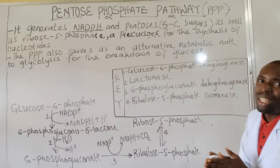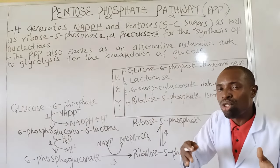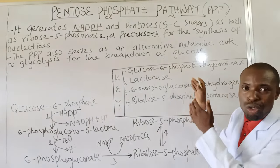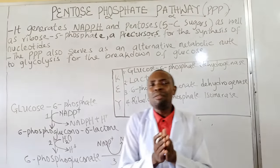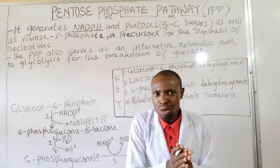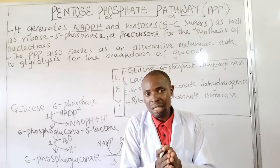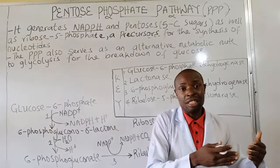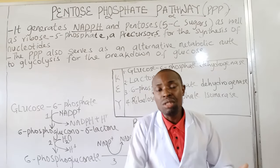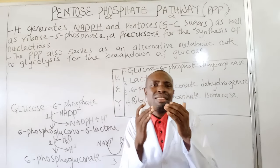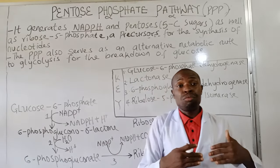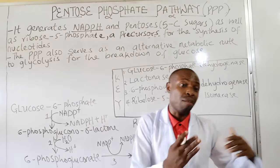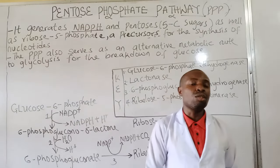We should also understand that this pathway serves as an alternative metabolic route to glycolysis, as we have right here on the board, for the breakdown of glucose to a 5-carbon sugar. Take note, this pathway does not lead to the formation of ATP, but it has two functions: it leads to the formation of reduced NADPH, which can serve for the synthesis of fatty acids and steroids, and also the ribose sugar, which is a major precursor for the synthesis of nucleotides and nucleic acids.